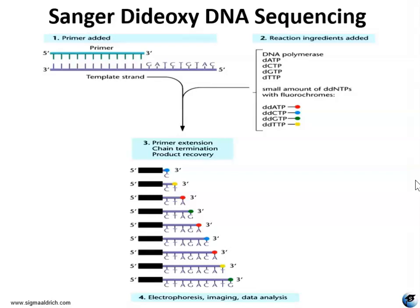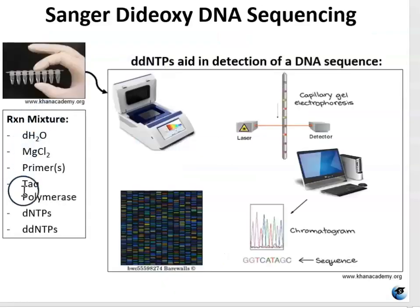Because the dideoxynucleotides are labeled and they fluoresce at different wavelengths — different colors — depending on which nucleotide it is, you can add a flag that is a different color. A laser at the end is used to detect which color is located at which position. If you understand PCR, you understand Sanger sequencing, because Sanger sequencing is just PCR with a different ingredient thrown in. You're using the same types of enzymes for all the replication — the same principle, cycling through different temperatures — with the same reaction mixture except dideoxynucleotides are added in addition to the regular deoxynucleotides.